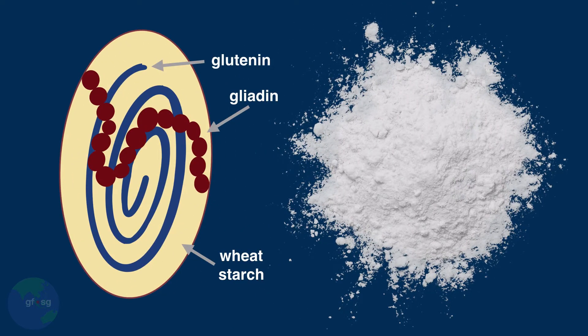There are two specific proteins, glutenin and gliadin, inside of the wheat seed. Even after the seeds are ground into flour, the two proteins stay tightly coiled around the starch.